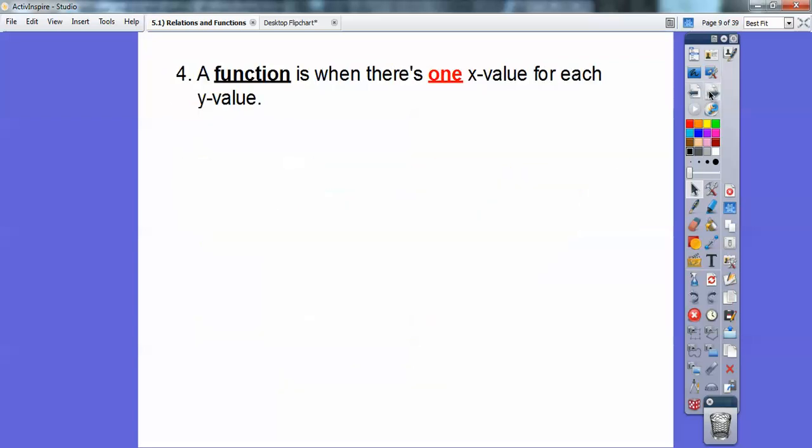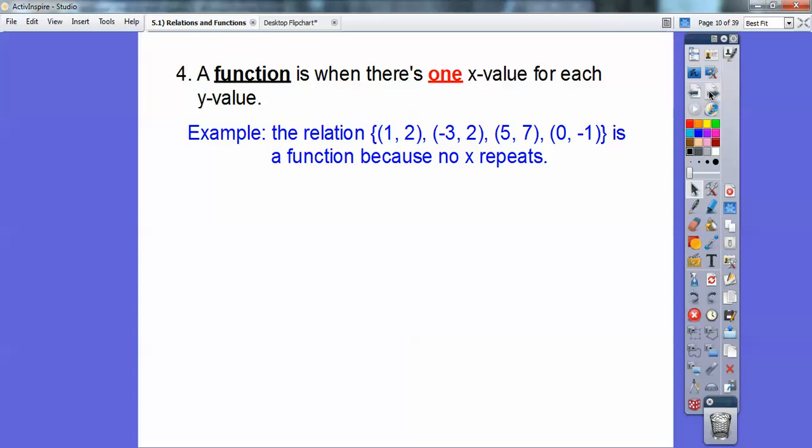A function is where there's one X value for each Y value. So for example, in this relation right here, it's a function because none of the X's are repeating. So it's okay to have the Y's repeat, like this Y and this Y are repeating, but the X's can't repeat and give different Y values.